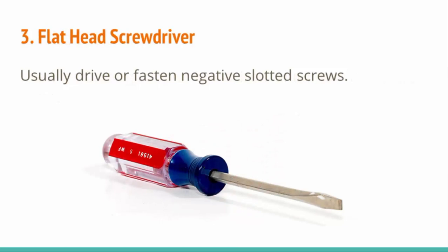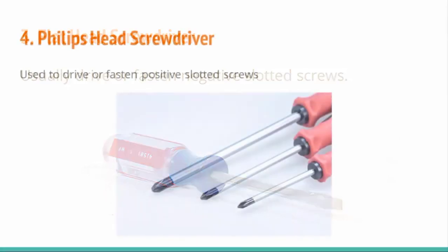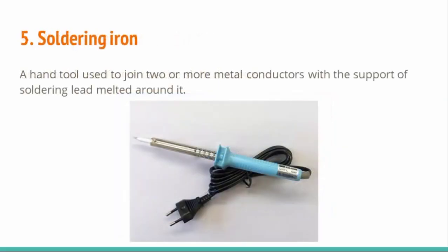Number 3: Flat head screwdriver — usually used to drive or fasten negative slotted screws. Number 4: Phillips head screwdriver — used to drive or fasten positive slotted screws. Number 5: Soldering iron — a hand tool used to join two or more metal conductors with the support of soldering lead.